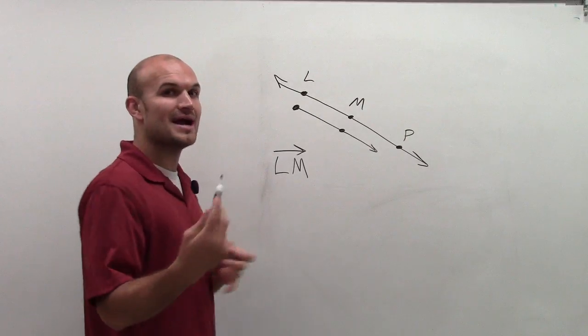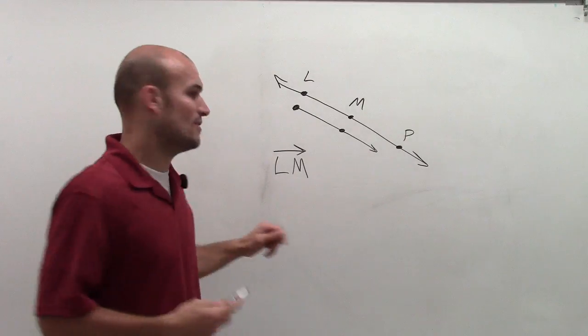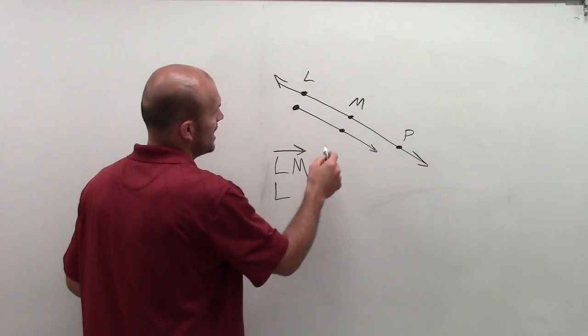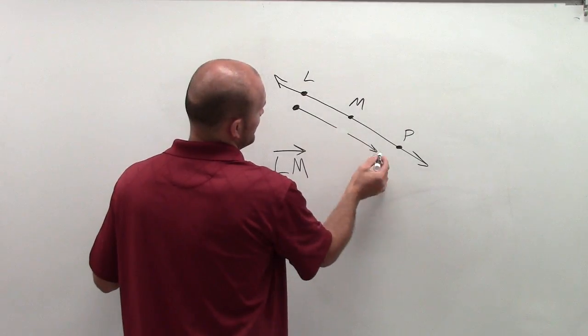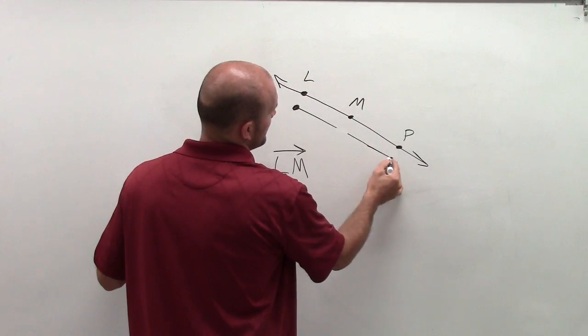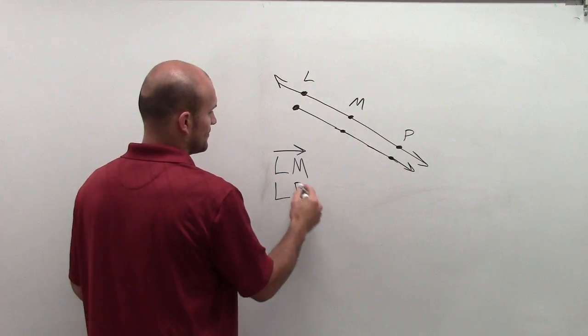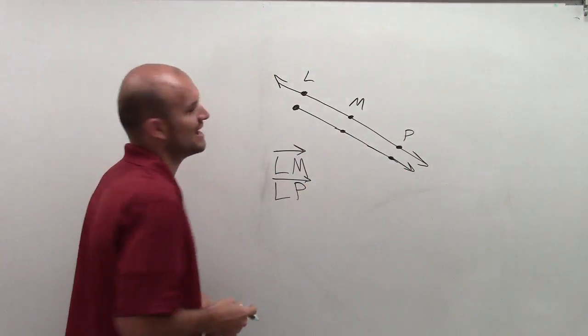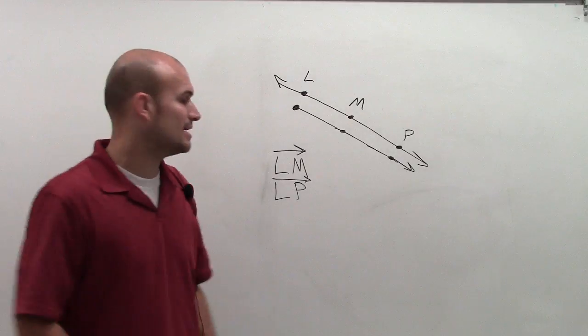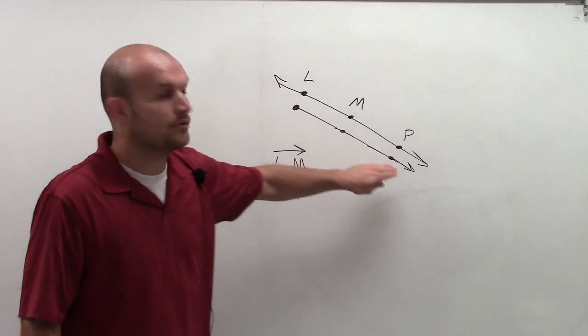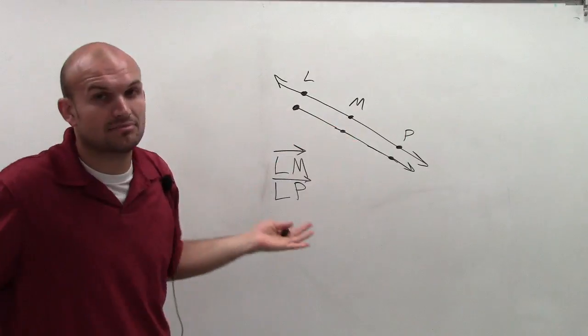Now, similarly to actually label kind of that same ray, I could actually also use L, and rather than labeling it M, I could say LP. And that's actually going to give me that exact same ray, but it's a different way of labeling the exact same ray.